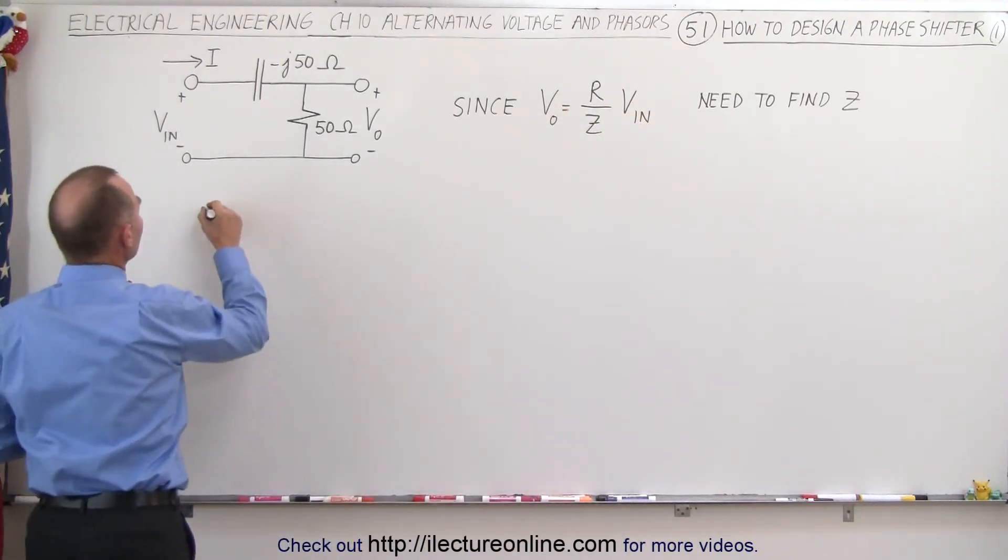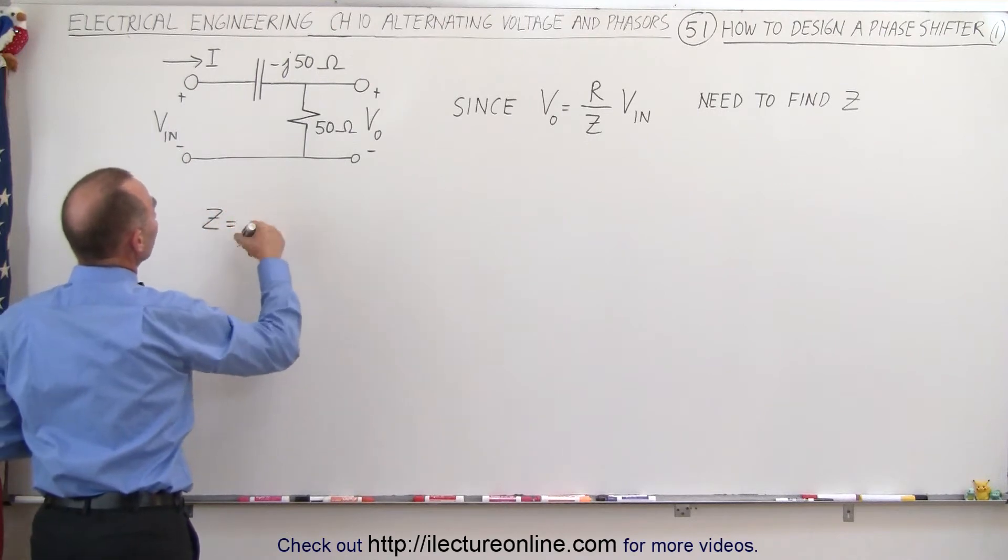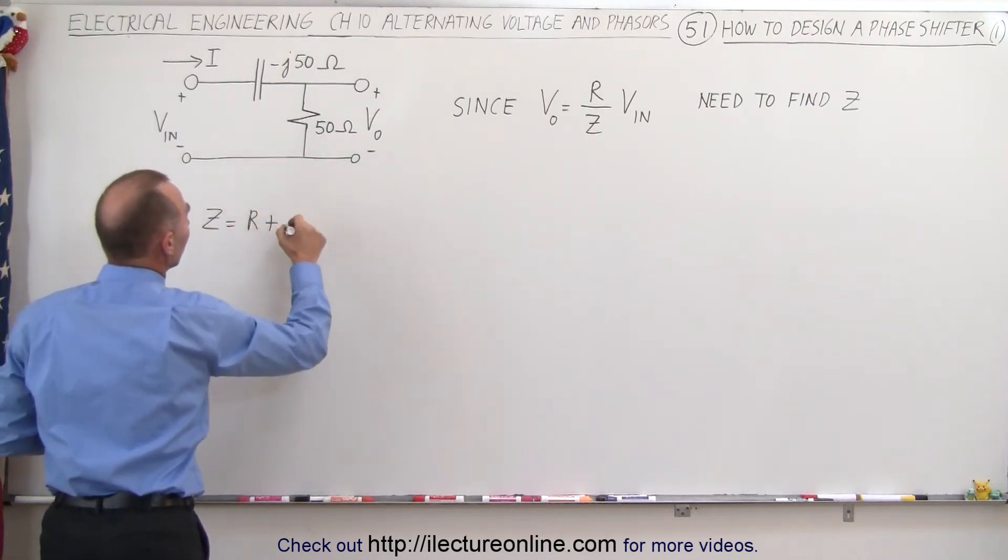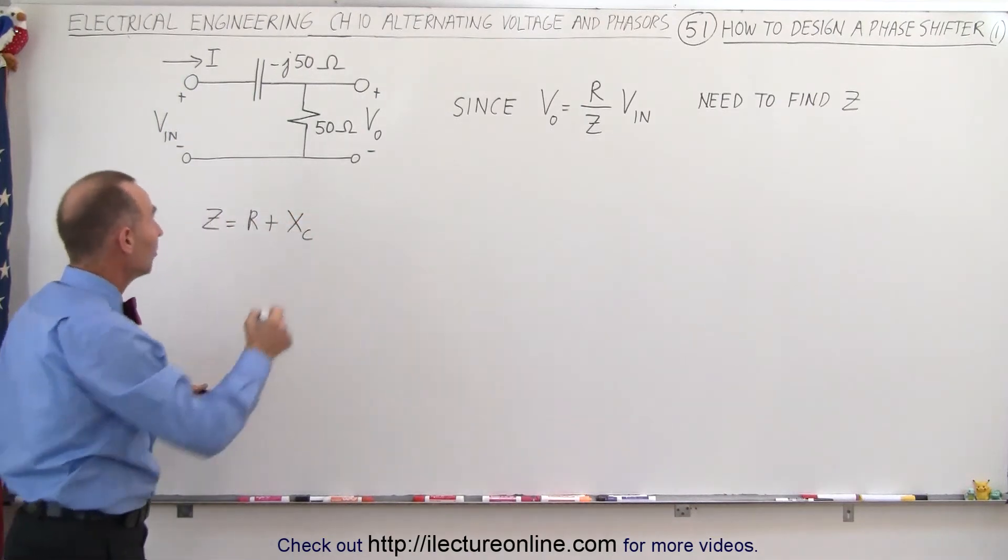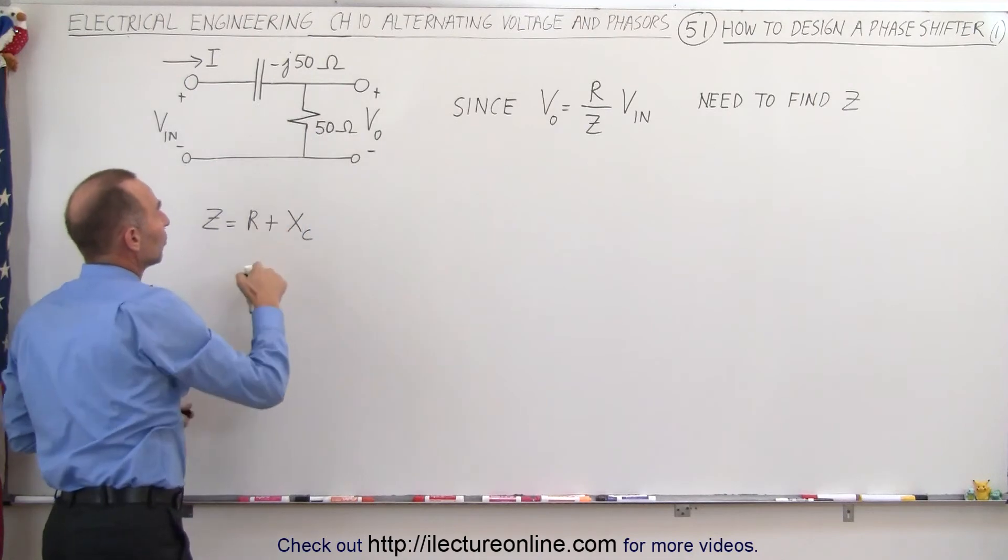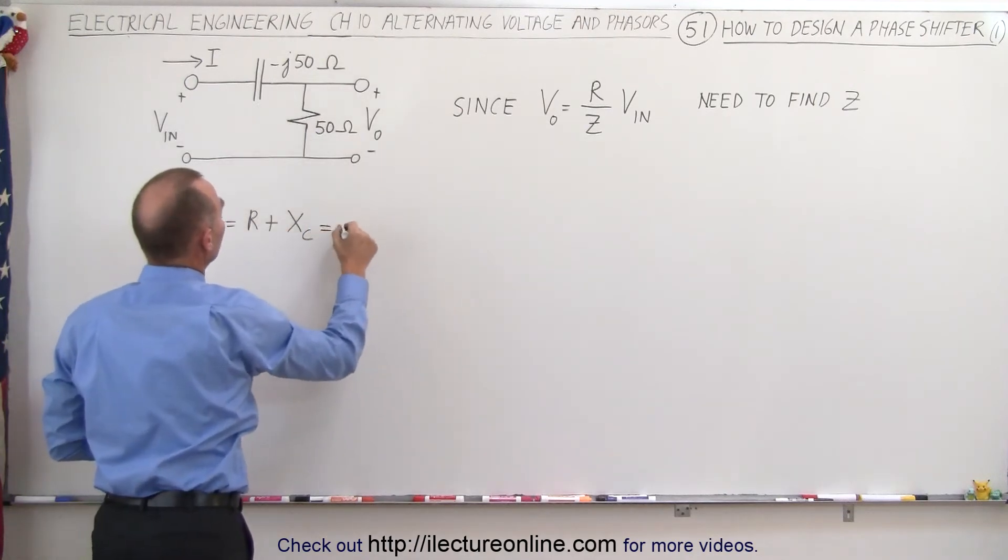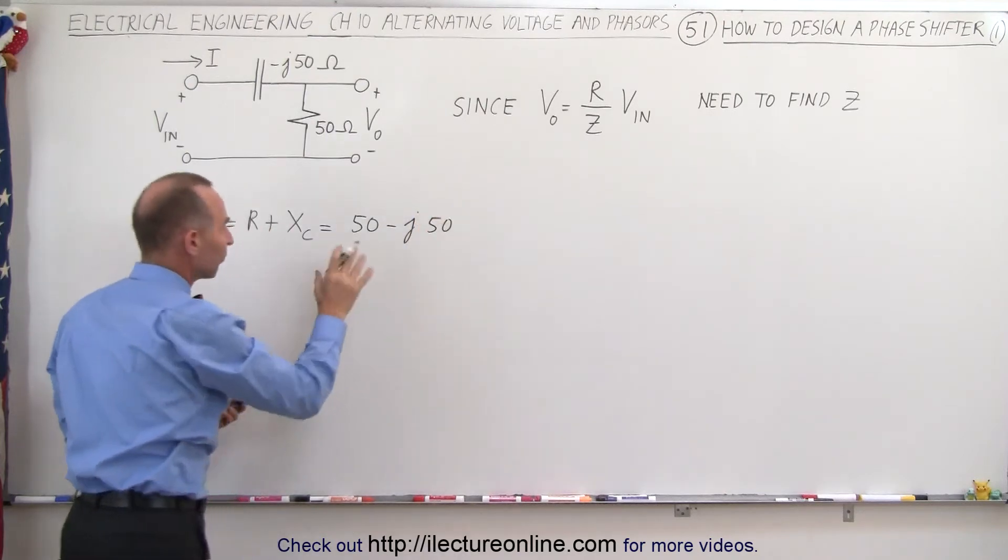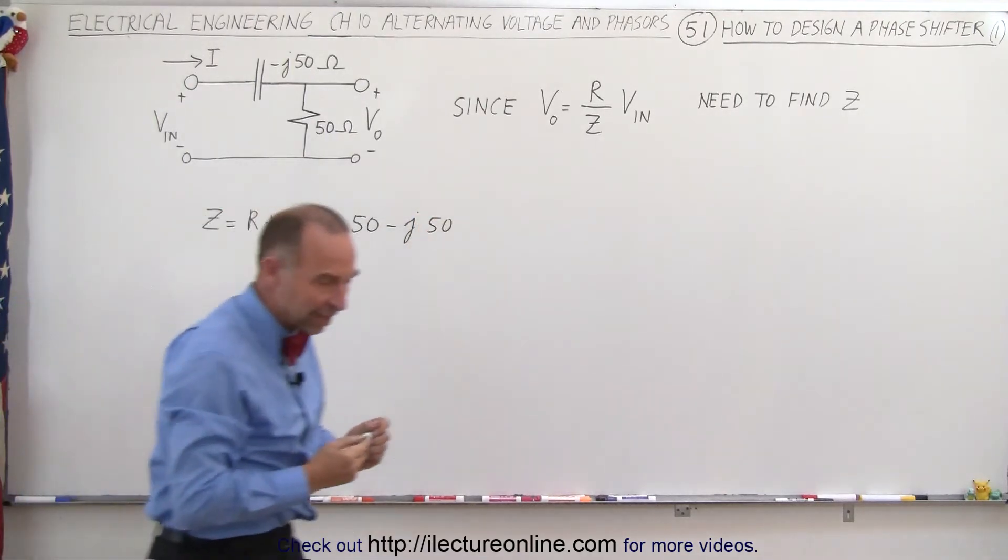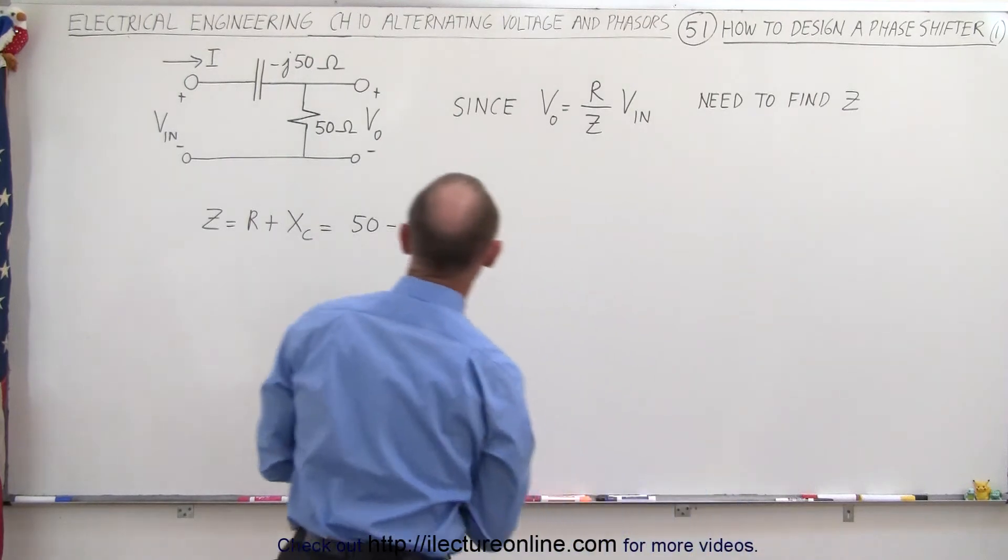So how do we find the impedance? Z, well that's going to be equal to the sum of the resistance plus the reactance of the capacitor, because this is a series circuit. So when we do that, well this is equal to 50 minus j times 50, and if we then convert that to the magnitude and phase angle format, let's see here.